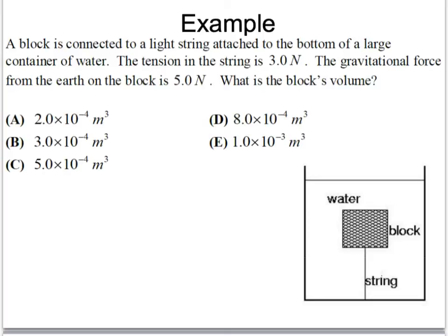Alright, another example where we're going to do it basically backwards. A block is connected to a light string attached to the bottom of a large container of water. The tension in the string is 3 newtons. The gravitational force from the Earth on the block is 5 newtons. So it has a weight of 5 newtons. What is the block's volume? Now, what's crazy about these fluids questions is those two things seem unrelated. It's like, wait, you told me tension and weight, and now I'm supposed to know volume. But we can actually find it out. So first off, let's do this kind of slowly. Draw our free body diagram.